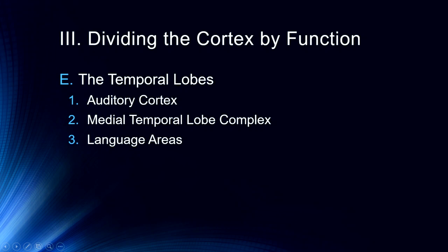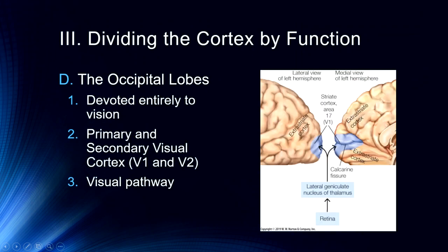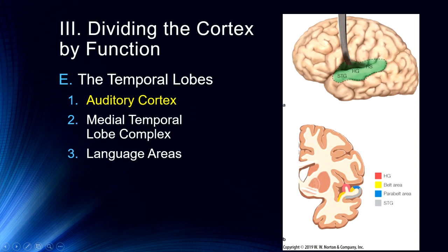Finally, temporal lobes. We have the auditory cortex right here tucked inside the Sylvian fissure. Here you can see what's called Heschel's gyrus, the belt area, parabelt areas, and the STG areas. These are primarily involved in auditory processing. This is our auditory processing capacity, whereas this whole cortex here is devoted to visual processing. We are very visual creatures. We process most of our world through our visual systems.